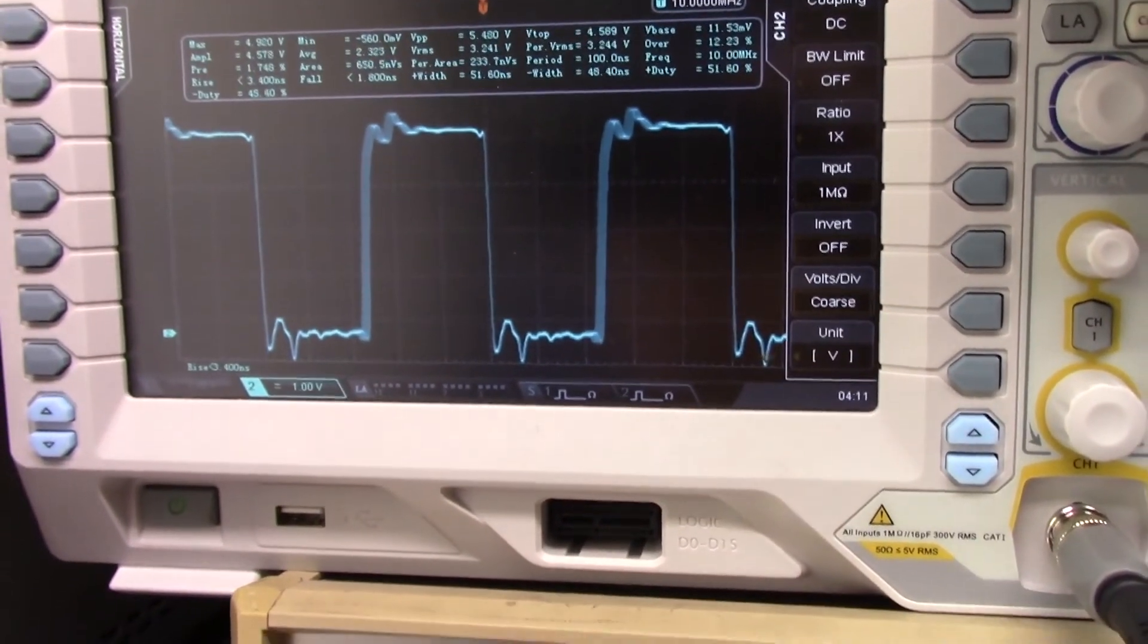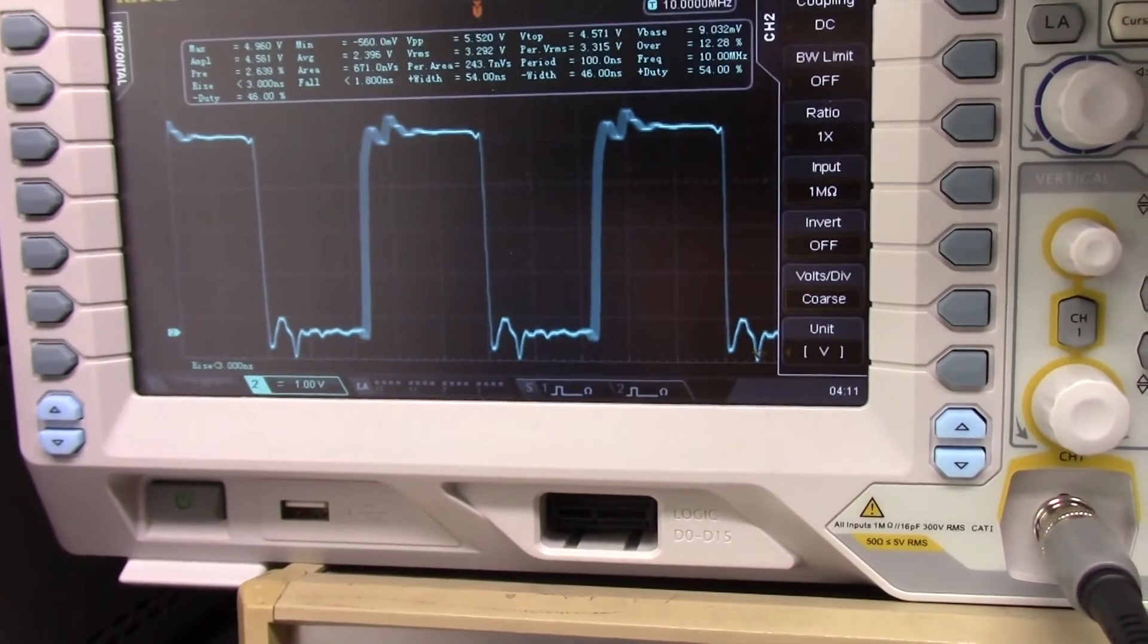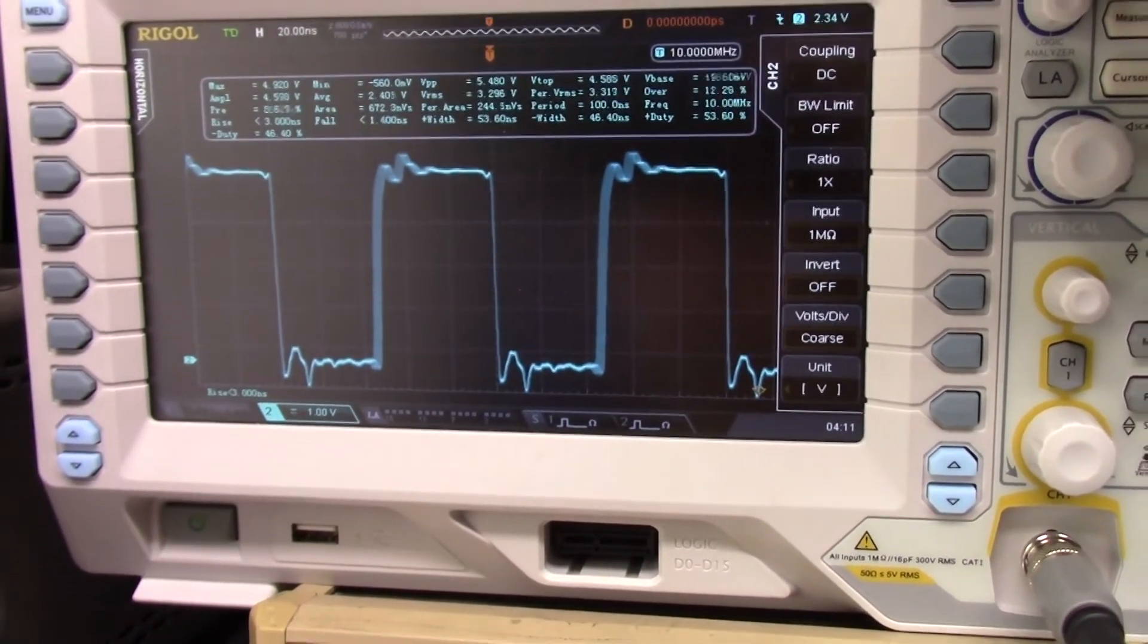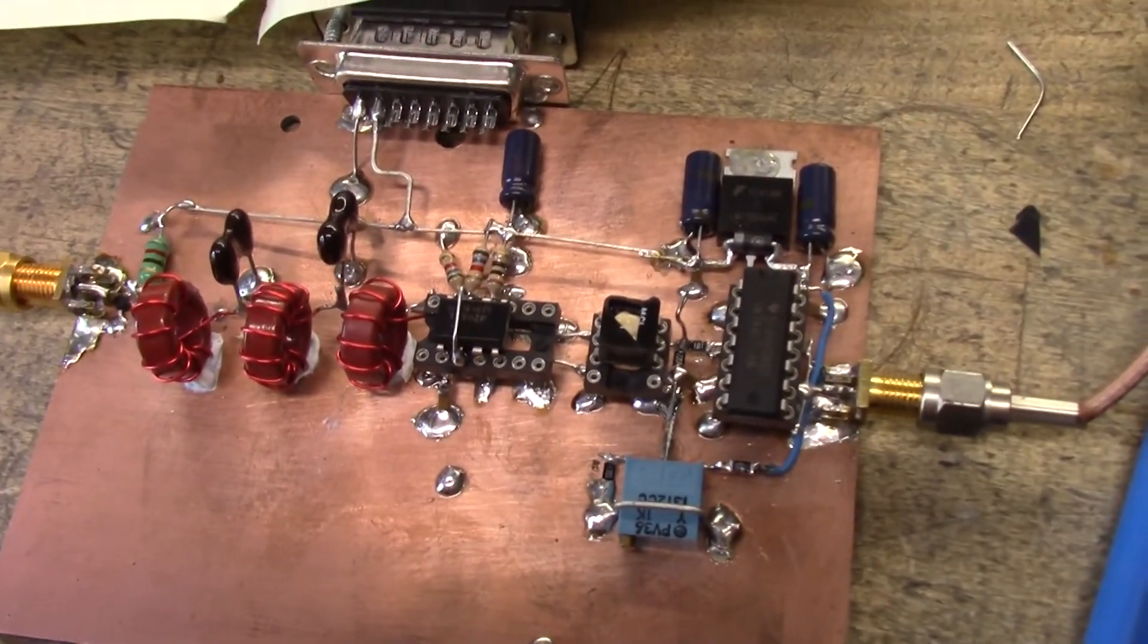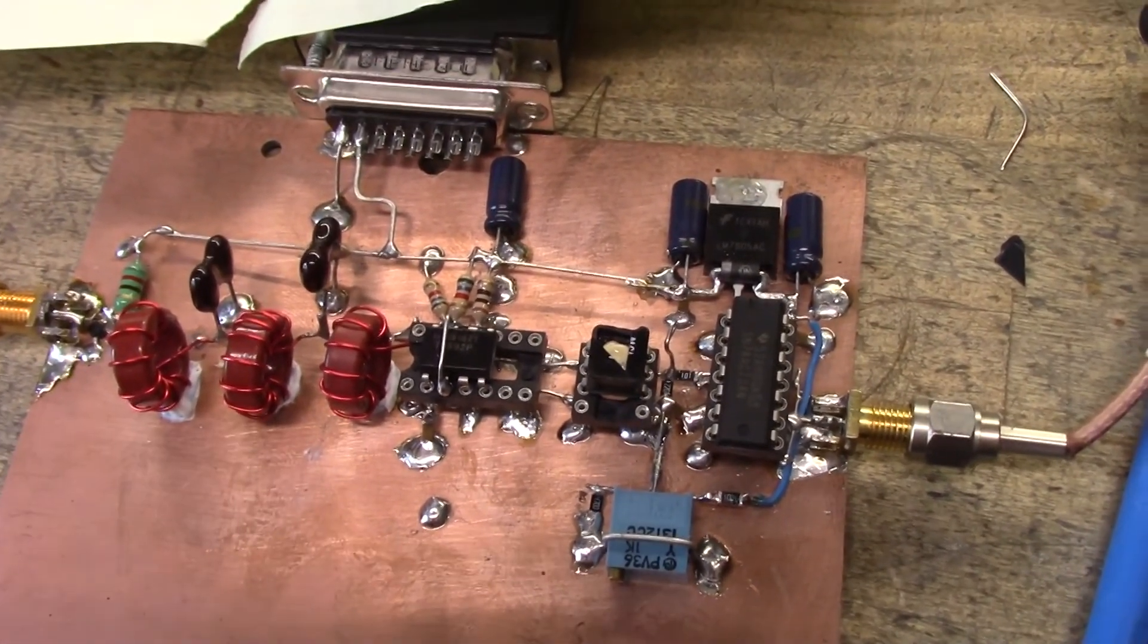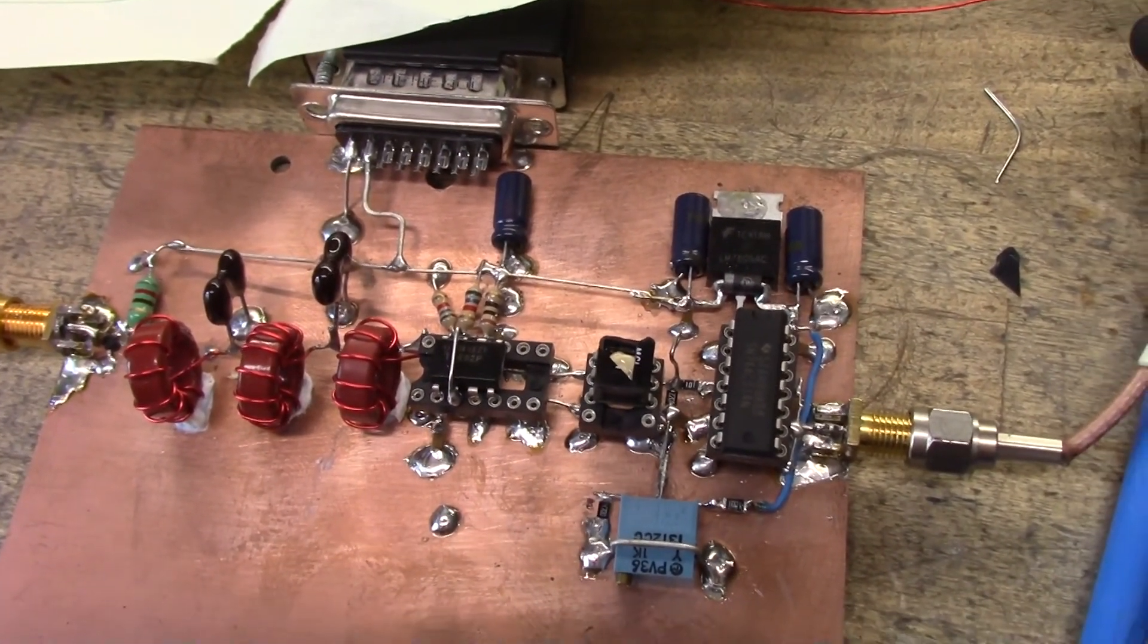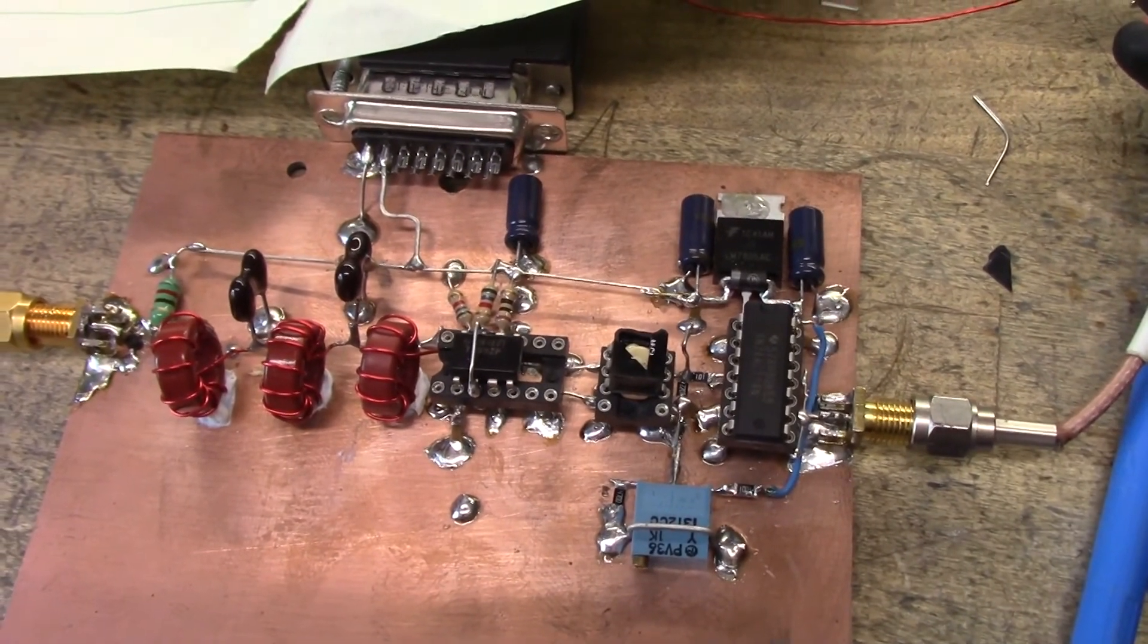First order of business, we need to figure out either how to get more gain out of the video op amp IC, which I've already got strapped for max gain, or we need to change the configuration of the limiter so that it requires less input signal to get where we need to go. Work continues.